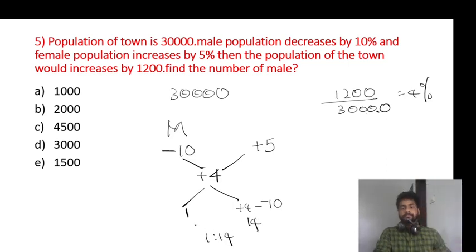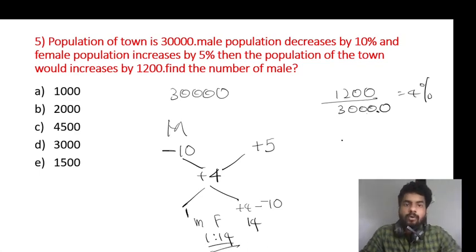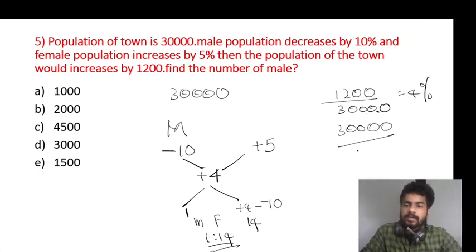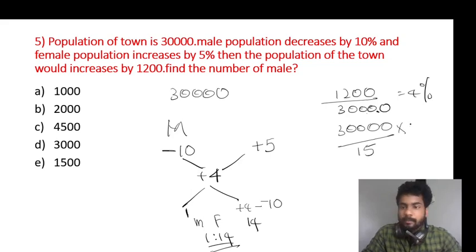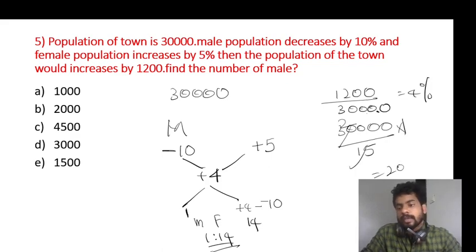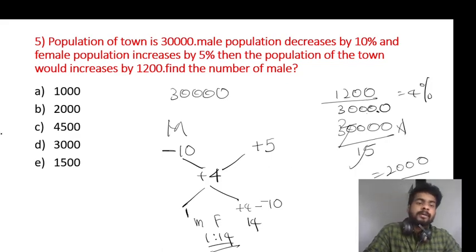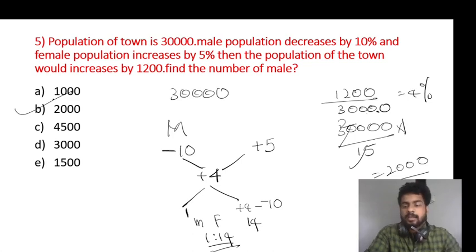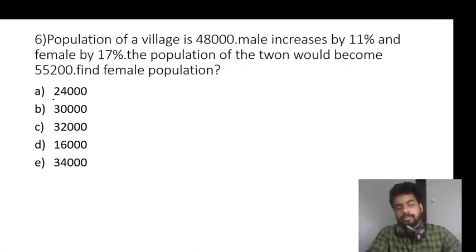Plus 4, minus — so this is 14 to 1. Total 30,000. 14 plus 1 is 15. 1 part is 2,000. Male population ratio is 14, female population is 1. Last population of a village is 14 parts.